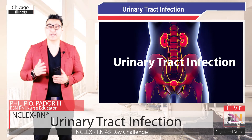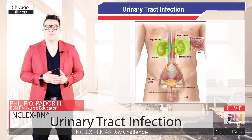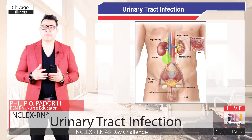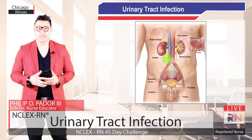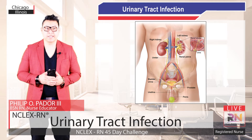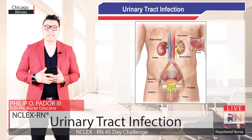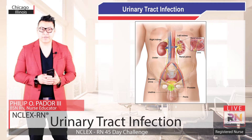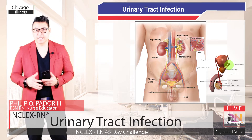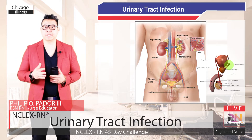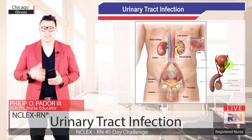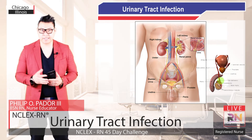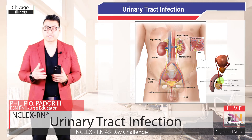Let us begin by looking at the male. Here we have the kidneys. Coming off the kidneys is the ureter, which carries urine into the bladder. Here we have the glans, penis, and urethra. Below the bladder, we have the prostate. Coming past the prostate and into the urethra is the seminal vesicles, an important part of semen production. Then we have the vas deferens, the actual tube that runs from the testis, and the testis is where the sperm is produced.